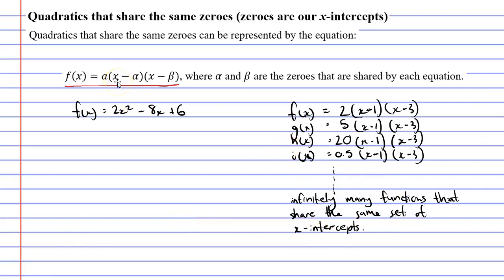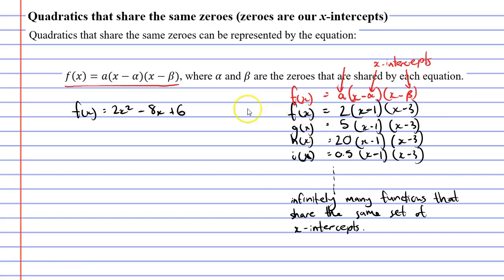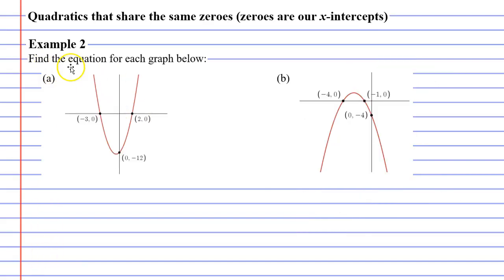So how does this relate to the equation we were looking at at the very beginning? If I write this equation above my four functions, you'll notice that alpha has been 1 each time, and beta has been 3 each time. So alpha and beta are used to represent the x-intercepts. When talking about a family of functions, alpha and beta remain the same each time — what changes is the pronumeral a. We're going to complete four examples using this equation, given the x-intercepts, and figure out what a equals.